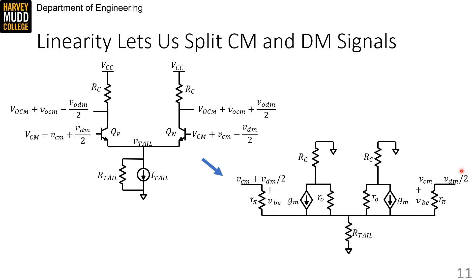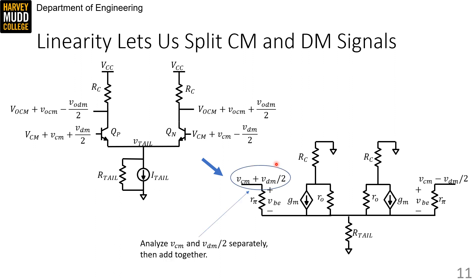Even if we use differential representation, there are still two differential signals — we need to think about the common mode as an input and the differential mode as an input, which gets us back to the same problem. Fortunately, our small signal model is linear. That means we can break the input signal up into VCM and VDM, analyze the effect of the circuit on those two signals separately, and then add the results together to find the output. Breaking up the differential and common mode signals like this is called half-circuit analysis.